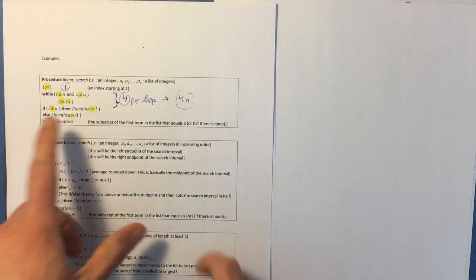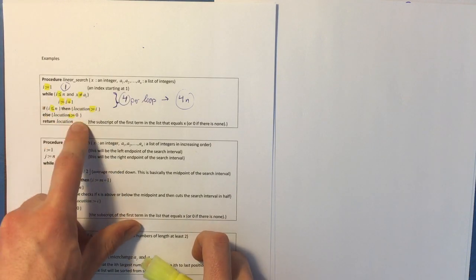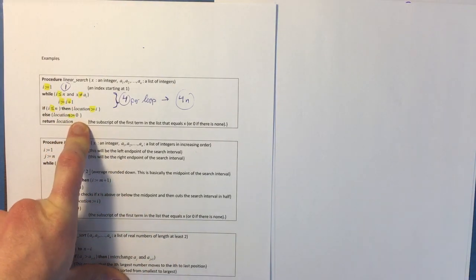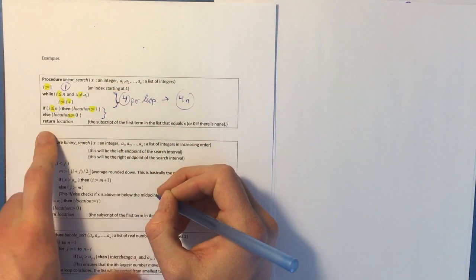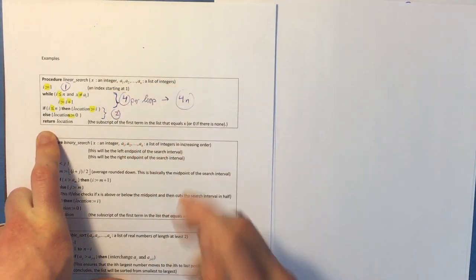So either you're going to do less than or equal to and then this assignment, or less than or equal to and then this assignment. So that's not three. That right there, that little section with the if then else, that is just going to be two operations.